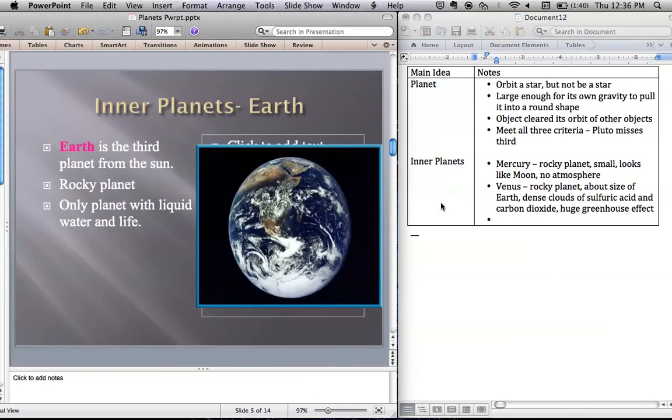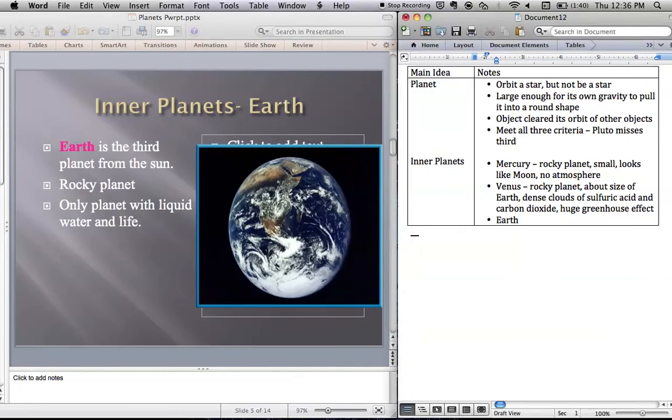Our next planet is, of course, our home, Earth. It's considered a rocky planet. Even though there's oceans on the Earth, the main Earth itself is rock. And so that's why we consider it a rocky planet. It's the only planet with liquid water and life that we know of. It's the only planet in our solar system, for sure, that has liquid water and life. There may be planets around other stars, but we're going to focus on our star today.